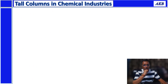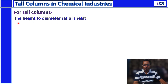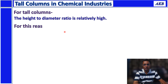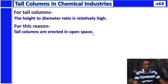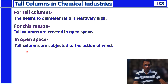For tall columns, the height-to-diameter ratio is relatively high. For this reason, most tall columns are erected in open space instead of installing them inside buildings. One of the reasons for this is their relatively high height-to-diameter ratio. If you are erecting them in open space, then these tall columns will be subjected to the action of wind, and you need to consider this while designing those columns.